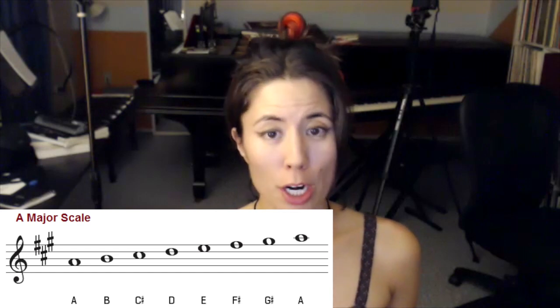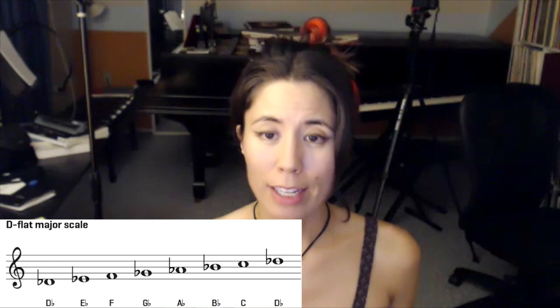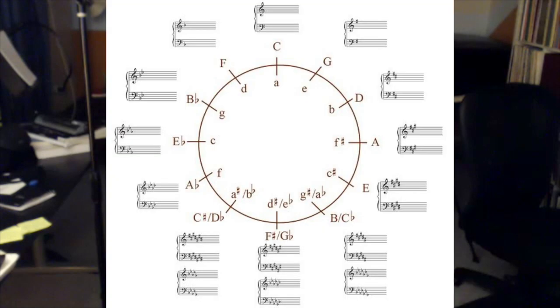Every major and minor scale has a different number of sharps or flats associated with it. For example, A major has three sharps, B major has five sharps, D flat major has five flats, and C major has zero sharps and zero flats. There's also something called the relative minor — every major scale has a minor scale equivalent. For example, C major's relative minor is A minor, which has the same key signature — zero sharps and zero flats.